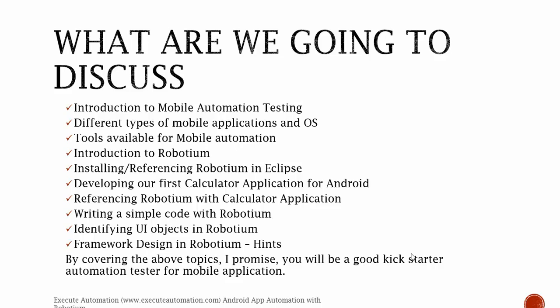We'll discuss installing and referencing Robotium in Eclipse, and also develop our first calculator application for Robotium. There was a question from one of the guys on the Facebook page asking what is the real purpose of developing a calculator application. The answer is: before starting automation testing with Robotium, we need a little understanding of how applications are actually built in Android. If we have a clear understanding of how Android works internally, it is very easy for us to test the application under test.